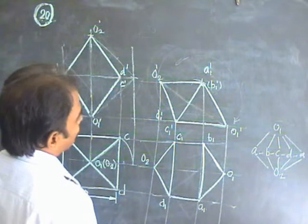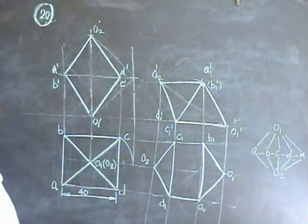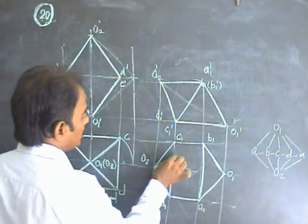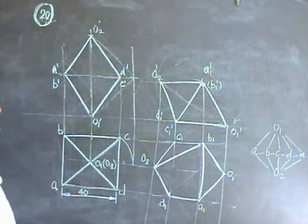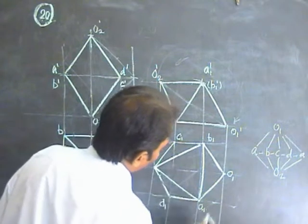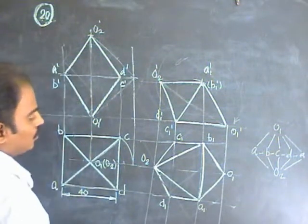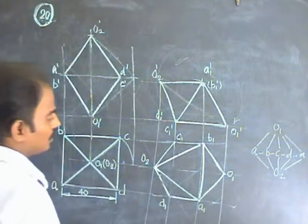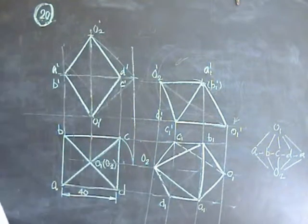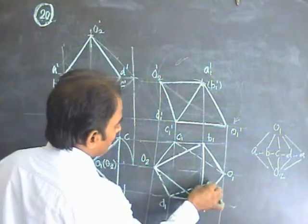O1A is visible, so make O1A a solid edge. O2B is also visible, so connect O2B as a dark line. O1A is also a dark one. O1C is fully invisible, so make O1C as a dotted line. O1D is also made dotted.